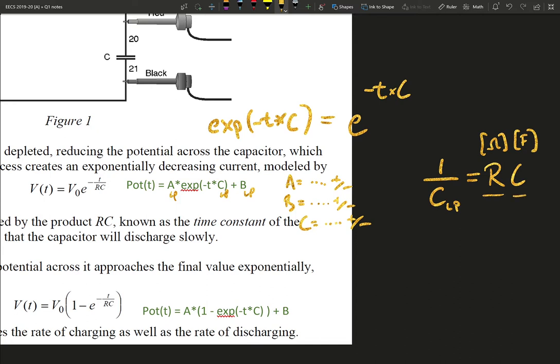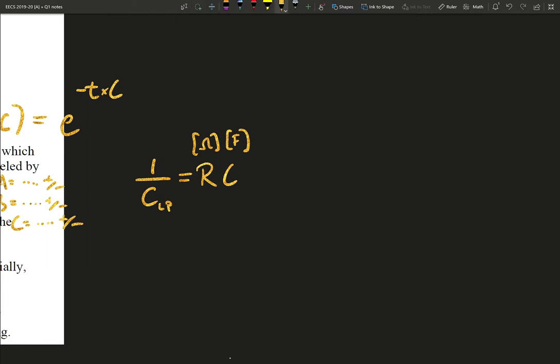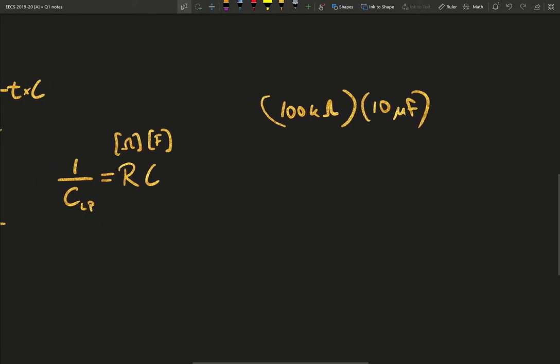So those should match up. That's the point of this experiment. Does the resistance times the capacitance match up with one over c being the c parameter from the curve fit? And we're going to say how good of a fit is that. Now when you multiply 100 kilo-ohms times what was the value of our capacitor?